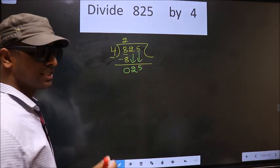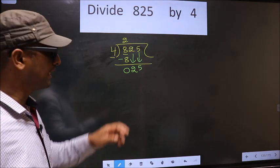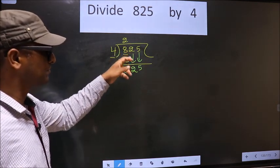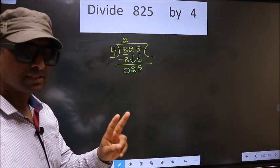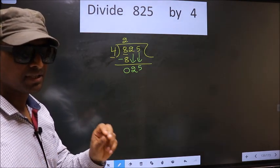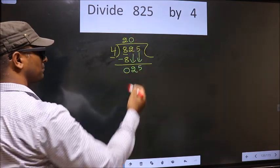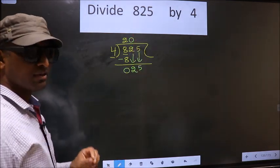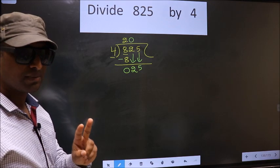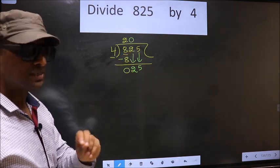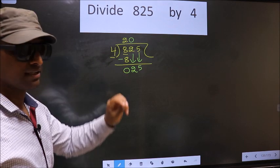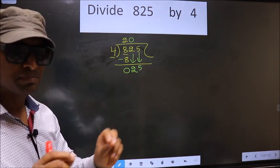you should remember this point. Whenever you are bringing down 2 numbers, 2 numbers at the same time, compulsory, you should put 0 in the quotient. I repeat. Whenever you are bringing down 2 numbers, then compulsory put 0 in the quotient. Remember this point.